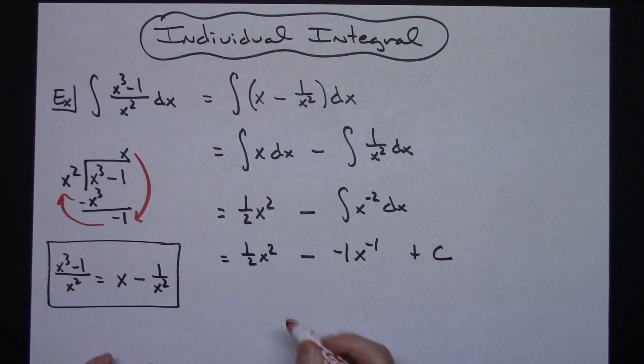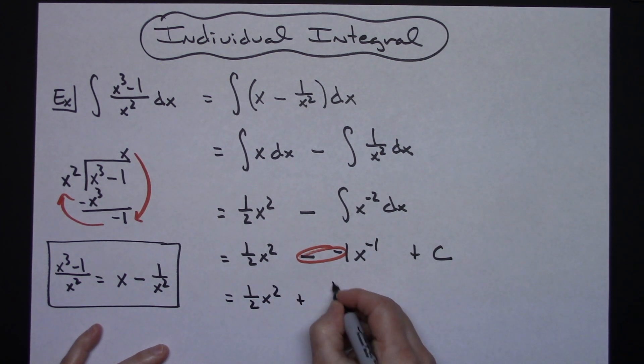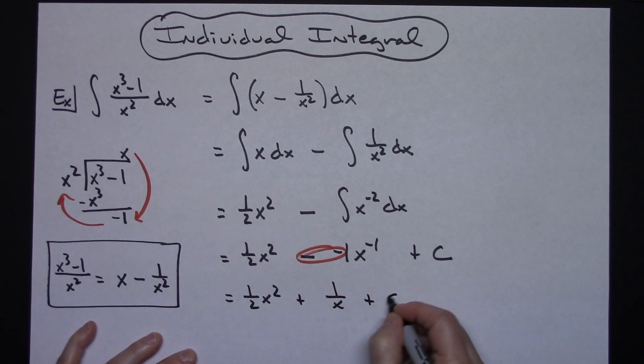I've got two negatives right there and that exponent I want to get rid of. So the final answer is 1 half x squared plus 1 over x plus C.